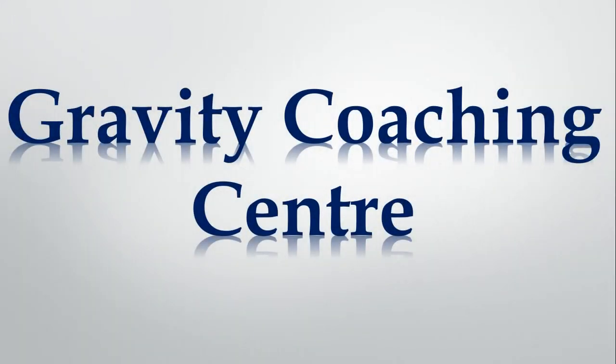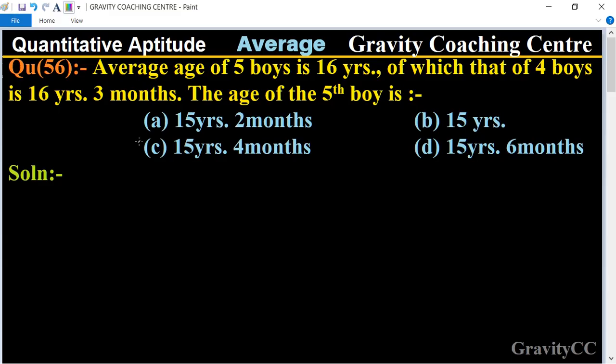Welcome to our channel, Gravity Coaching Center. Quantitative Aptitude, Chapter Average, Question Number 56: Average age of five boys is 16 years, of which that of four boys is 16 years 3 months. So the age of the fifth boy is what? In this question, given that the average age of five boys is 16 years.